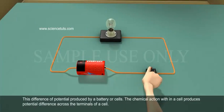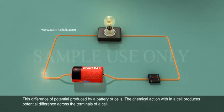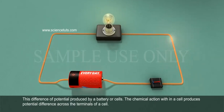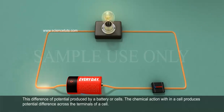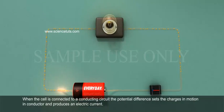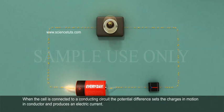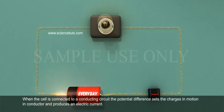This difference of potential is produced by a battery or cells. The chemical action within a cell produces potential difference across the terminals of a cell. When the cell is connected to a conducting circuit, the potential difference sets the charges in motion in the conductor and produces an electric current.